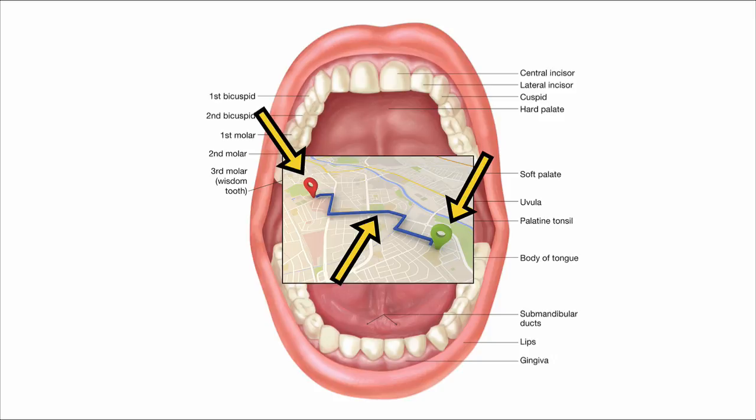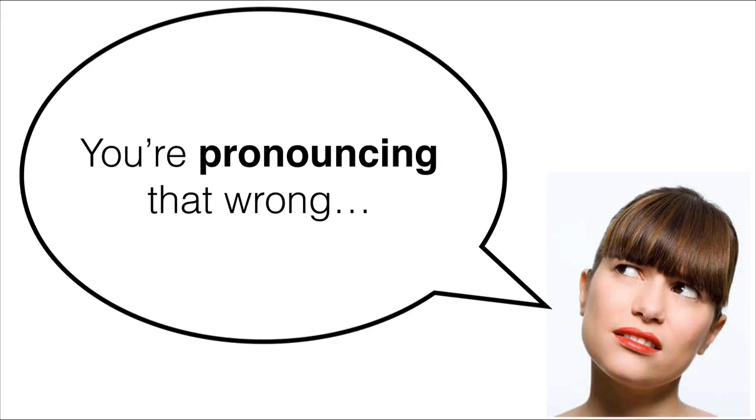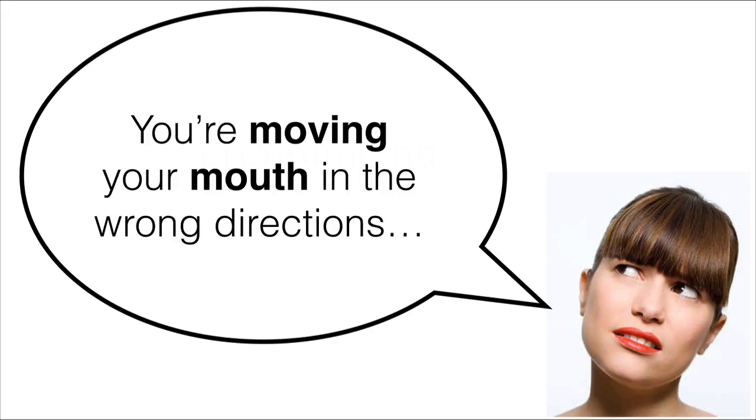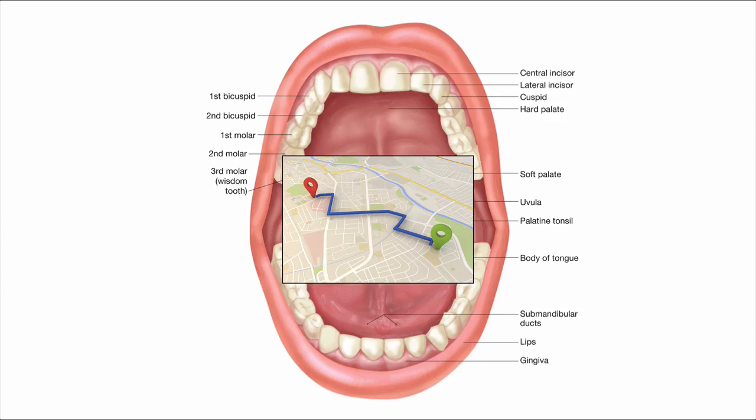You see, when you're driving your car, you are navigating the physical terrain of the earth. Similarly, when you're pronouncing the sounds of language, you're navigating the physical terrain of your mouth. So when a native speaker says to you, you're pronouncing that wrong, what she's really saying is, you're moving your mouth in the wrong directions. So to learn your missing sounds, you need to find a map of your mouth, get a feel for the landscape, then move your tongue, lips, and other articulators in the right directions.